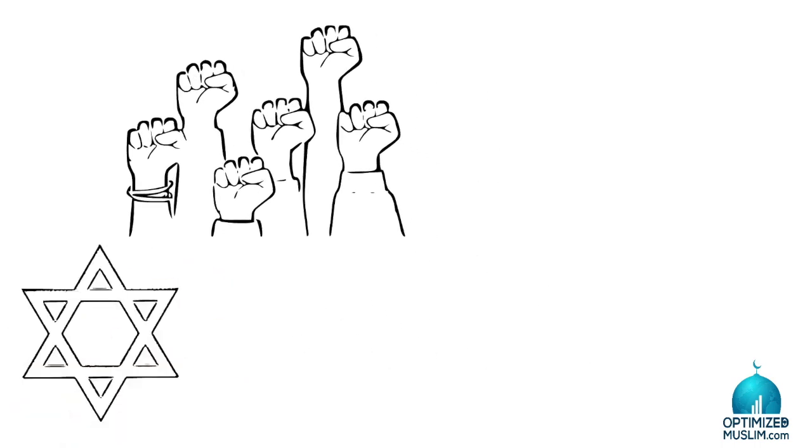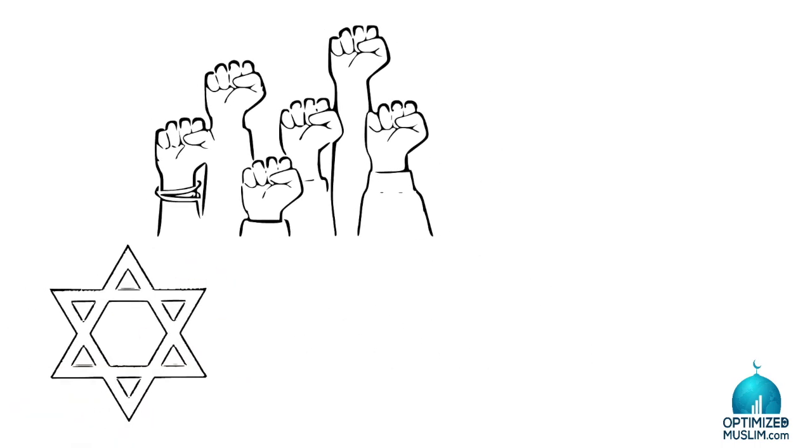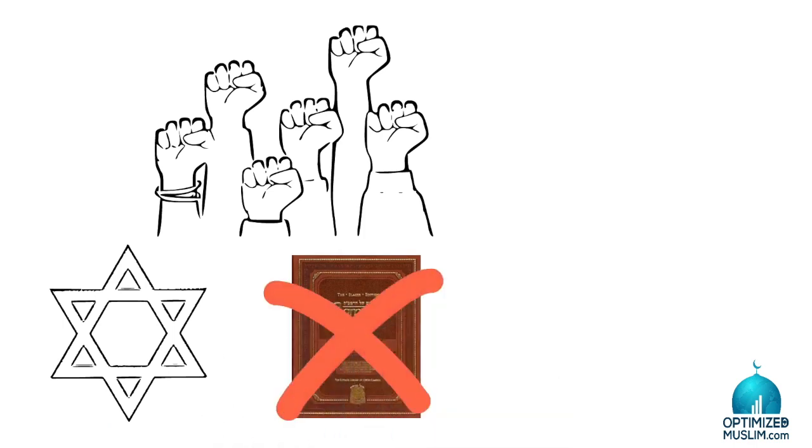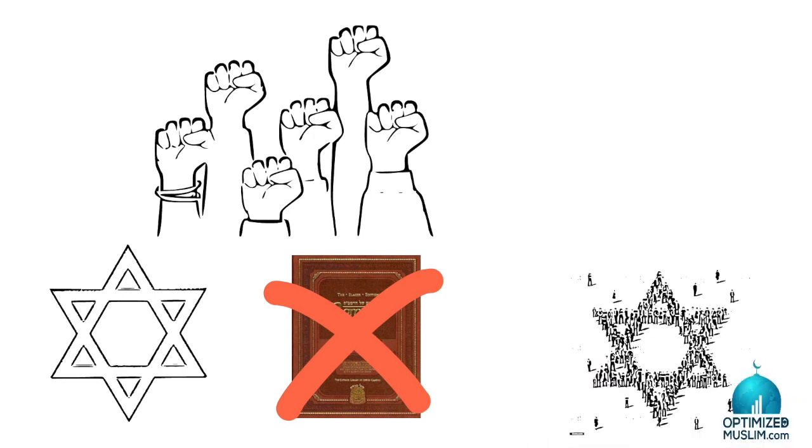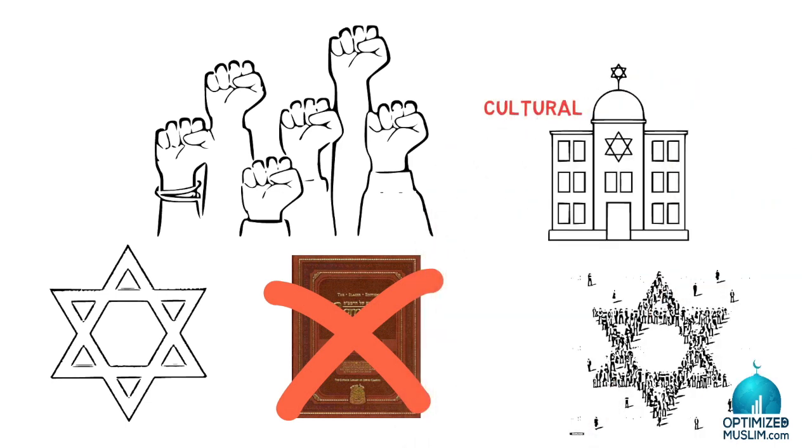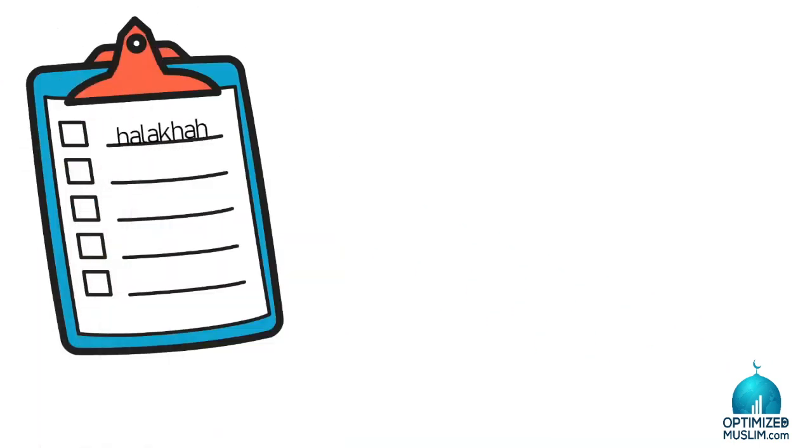The vast majority of Jews no longer believe in the 13 principles of faith as articulated by Maimonides, their greatest classical theologian. The historical critical method has ripped the Torah to shreds. Most Jews today are non-practicing, going to synagogue for cultural or social purposes, or they practice reformed Judaism where they can eat whatever they want. Their halakha, their sharia, is optional. Even belief in God is optional.